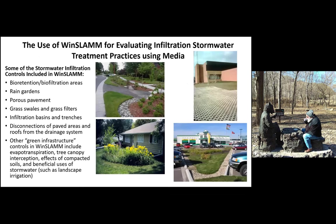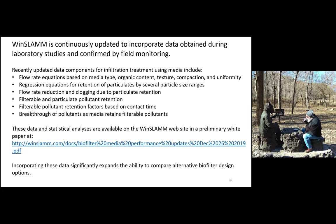Looking at what we've been doing with WINSLAMM with all this information: we have a lot of green infrastructure controls built into WINSLAMM — bioretention and bioinfiltration areas, rain gardens, porous pavements, grass swales, grass filters, basins and trenches, and simple disconnections. Other things incorporated into the model include evapotranspiration, canopy interception of trees, effects of compacted soils, and beneficial uses of stormwater for irrigation, toilet flushing, or whatever. We continuously update the model to incorporate data from laboratory studies as confirmed by field monitoring. Current work is upgrading the biofilter components based on information collected over a number of years, looking at flow rate equations based on media type, organic content, texture, compaction, and uniformity.